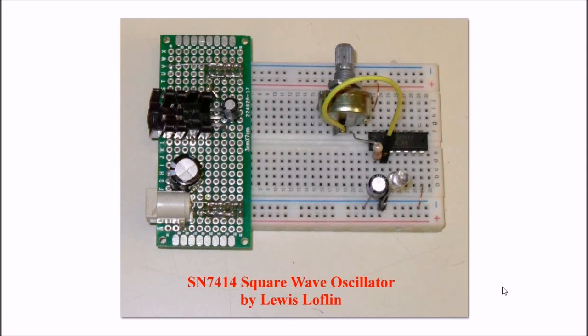The subject here is how to build a square wave oscillator using a SN7414 hex inverter integrated circuit. This has six complete inverters in the 14 pin integrated circuit, but what is unique is they are Schmidt trigger inverters, and we'll explain why that's important, and how to construct really simple square wave oscillators.